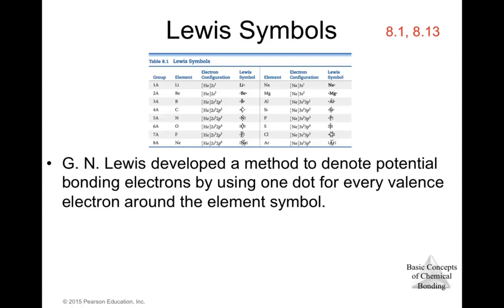For oxygen, which is family six, we have two pairs of electrons and two individual electrons — six total around the oxygen symbol. The same applies to sulfur, also family six: we write S with two pairs of electrons and two individual electrons around the symbol.